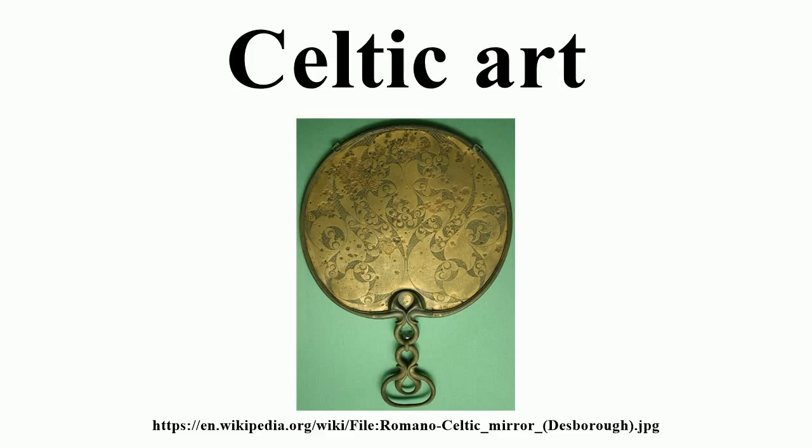Narrative scenes only appear under outside influence. Energetic circular forms, triskelés and spirals are characteristic. Much of the surviving material is in precious metal, which no doubt gives a very unrepresentative picture. But apart from Pictish stones and the insular high crosses, large monumental sculpture, even with decorative carving, is very rare.